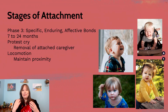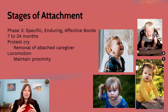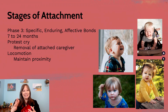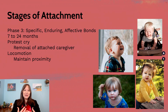The third stage of John Bowlby's theory was specific enduring and effective bonds — this is what we typically think of when we think of infant-parent attachment, occurring somewhere between 7 months and 24 months. Some studies have found it may peak as early as 9 months or around 14 months, but this is the really intense period. This is when most parents will notice the protest cry, which comes out when an infant is aware that their caregiver is leaving or has just left. The infant does not want the caregiver to leave and is going to protest as hard as possible to convince that caregiver it's not worth leaving.